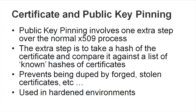Certificate and public key pinning — public key pinning involves one extra step over the normal X.509 process. That extra step is to take a hash of the certificate when you first request one. The first time you go out to a website — say homedepot.com over HTTPS — you capture the certificate and pin it. You take the certificate, pull a SHA hash off of it (not MD5, because it's insecure), store that hash, and pin it. The extra step is to compare that hash against a list of known good certificate hashes each subsequent time.